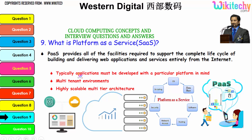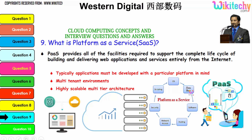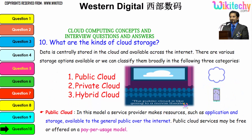PaaS means they give you a server with a particular operating system — you are renting an operating system. Whatever software, database, OS, hosting, network access, security, and scripting you want, you can configure it. Everything is there in Platform as a Service.